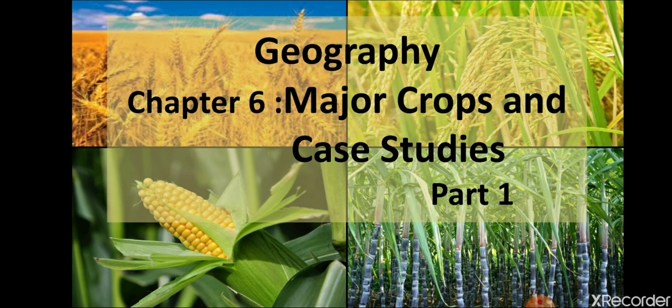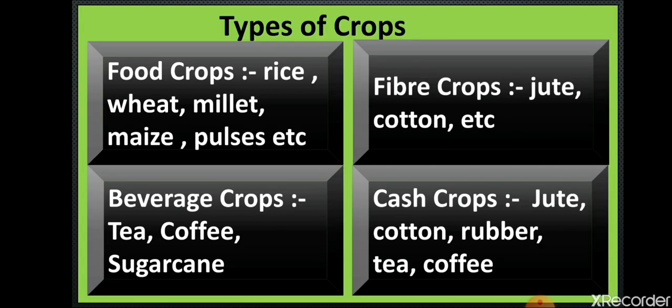As we have learned about agriculture in the fifth chapter, in this chapter we are going to learn about some major crops that are grown all over the world. We will also learn about the cropping pattern — how many crop seasons are there in a year — as well as how many types of crops there are. Crops are divided into different types on the basis of their consumption, and how people are utilizing the crops. So let's begin with food crops: the crops we use or consume in the form of food, like grains and pulses.